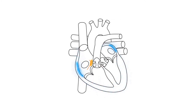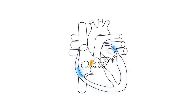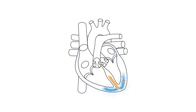Additionally, since action potentials can spread through the contractile cells of the heart, there is no need for a neuron or any signaling from the nervous system to provide the electrical signaling to each individual myocyte to cause contraction.